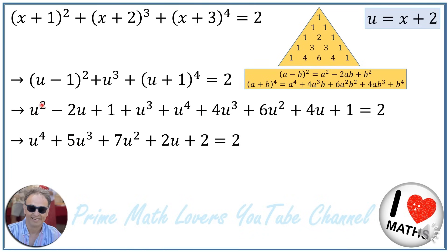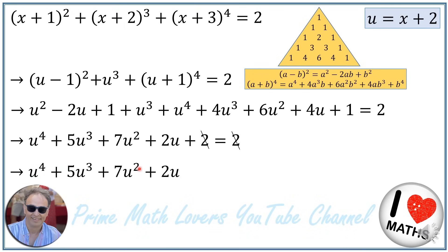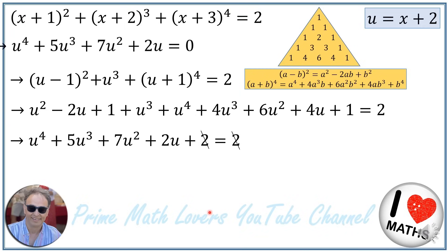Then 1u² + 6u² = 7u², and −2u + 4u = +2u, plus 2 equals 2. I can cancel 2 from both sides, and finally I have u⁴ + 5u³ + 7u² + 2u = 0. In the next step I need to solve this equation.